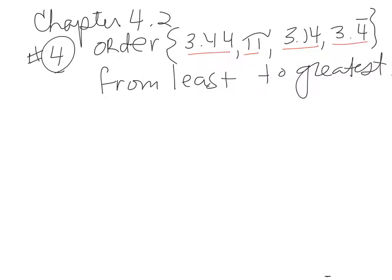We line them up by decimals. 3.14 goes on forever, that's pi, so I'm going to change that to a decimal.